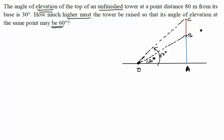And let us take these lengths as AB and BC. Now, we have to find CB. How much higher the tower must be raised? So we have to find CB. Let us call this X. We also don't know AB. So let us call this H.